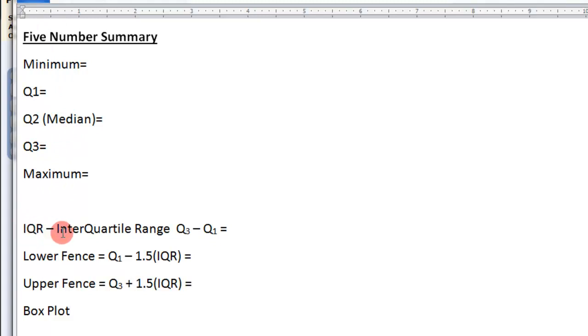Also, the IQR or the interquartile range, which is quartile 3 minus quartile 1, the lower fence and the upper fence, and then we'll do a box plot.